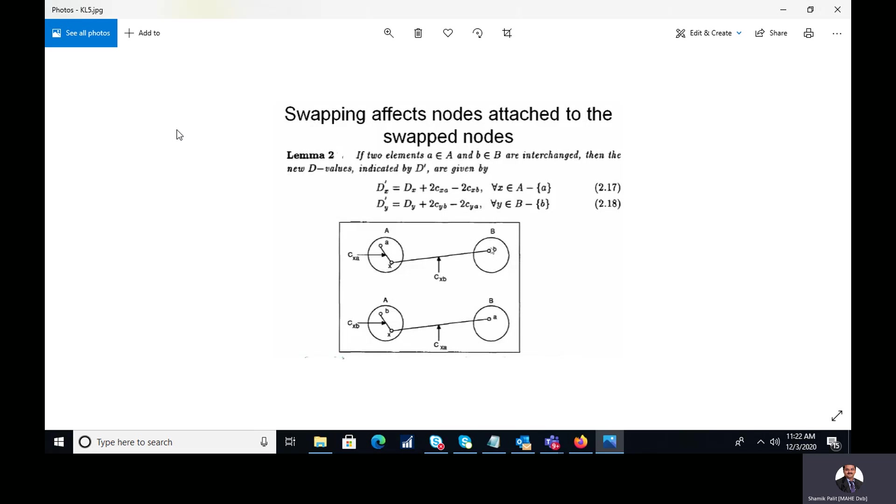So we have already gone through lemma 1 and we have seen the constraint associated with lemma 1. So now we are considering lemma 2 and here we are again redefining the value of D' as given over here considering both the elements a, which belongs to the cluster A and small b belonging to the cluster B.